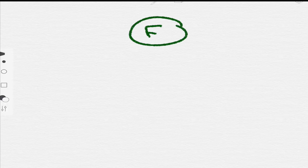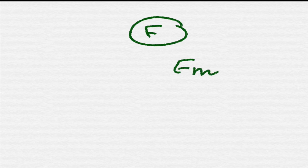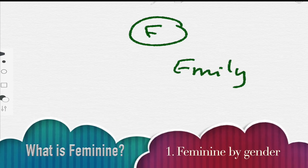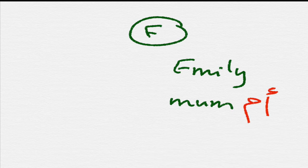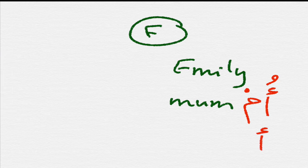Feminine in Arabic is, first, vocabulary which is feminine by gender. For example, Emily is feminine by gender — I can't say Emily is a guy. Equally, 'um' in Arabic means mother, and it's feminine by gender. I can't say my mom is a male. Similarly, the word 'ukht' in Arabic means sister, and it's feminine.